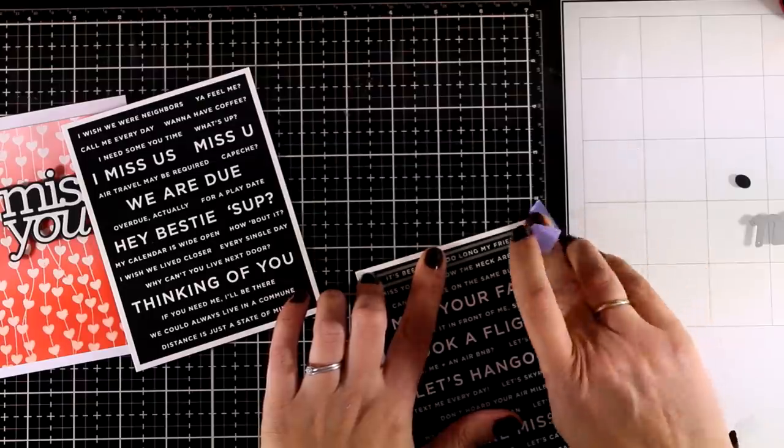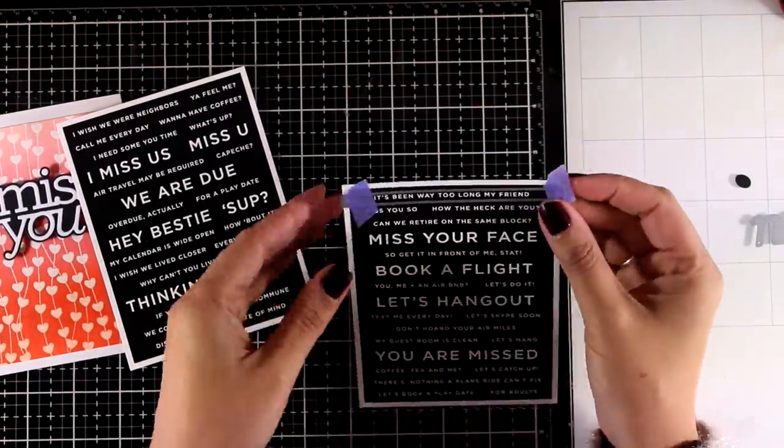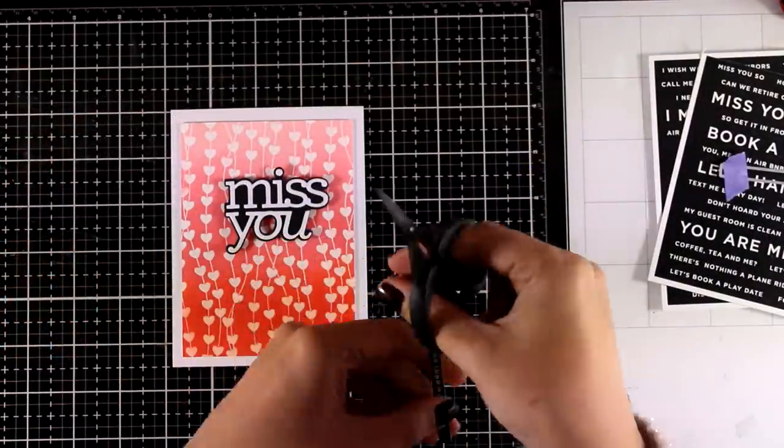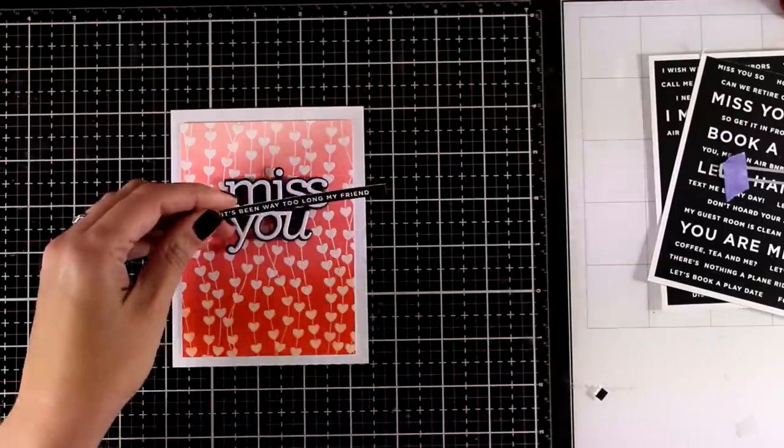So I'm using my skinny sentiment strip die at the top and of course you can use your paper trimmer to cut out those sentiments. I am going to add some glue at the back and stick it underneath my main sentiment.